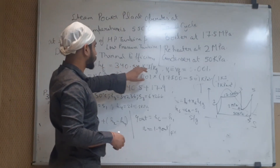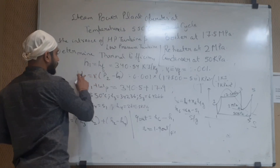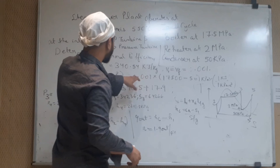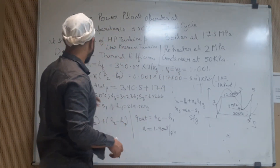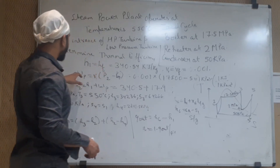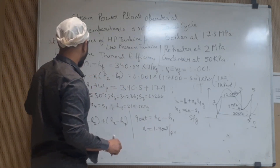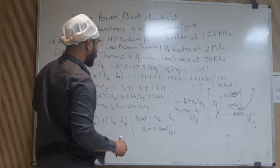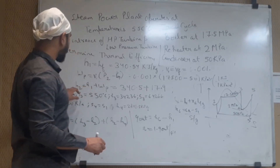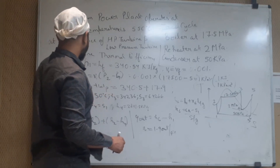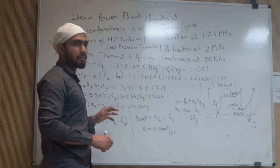The H1 value is given as 340.54 and the V1 value is given as 0.001. The pump work (burden) is calculated as V1 × ΔP = V1 × (P2 − P1), where V1 = 0.001 and P2 − P1 = 17,550. So we can find the burden from process 1 to 2, and then H2 = H1 + burden. Since H1 is given, we can easily find the enthalpy at point 2.